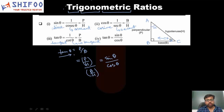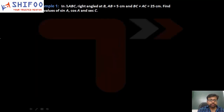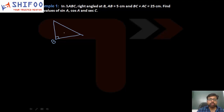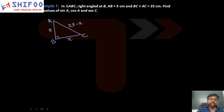Based on the knowledge of these trigonometric ratios, let us look at one problem. The problem says that in triangle ABC, right-angled at B, AB equals 5 centimeters, and BC plus AC equals 25. We have to find the values of sin A, cos A, and sec C.